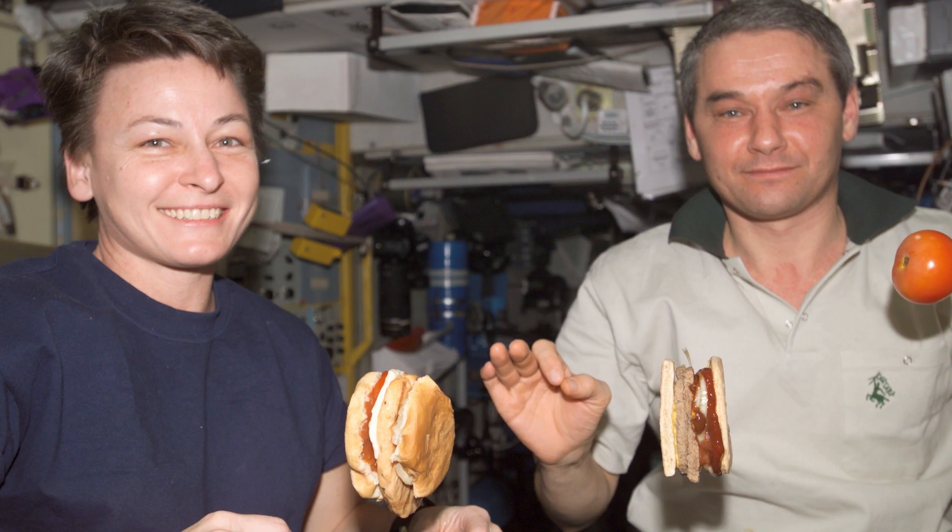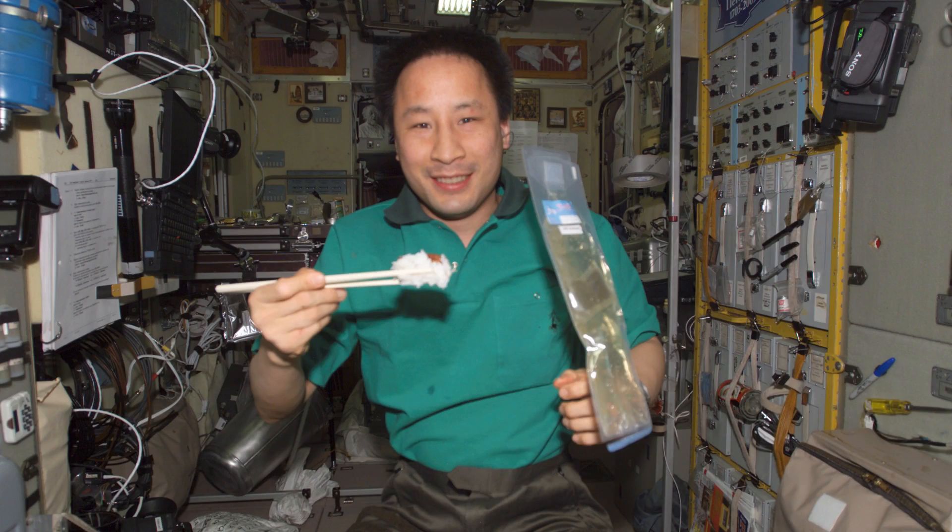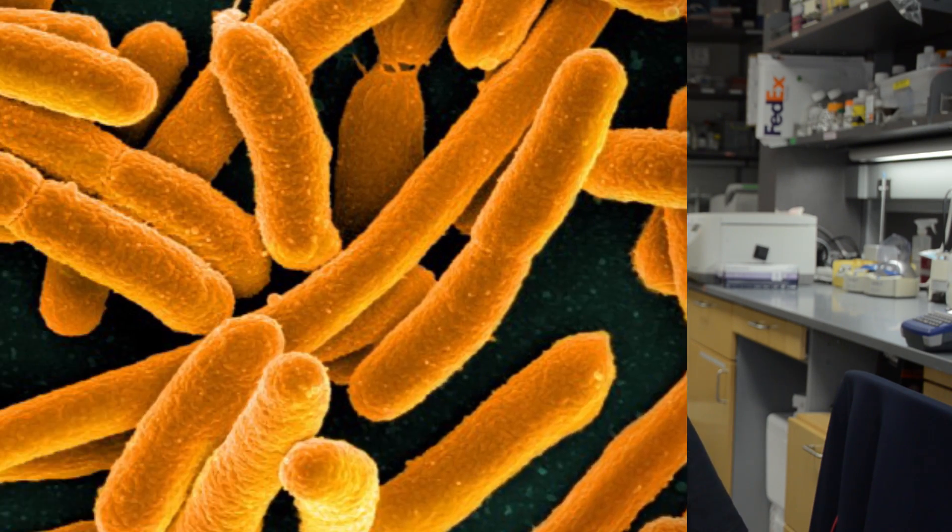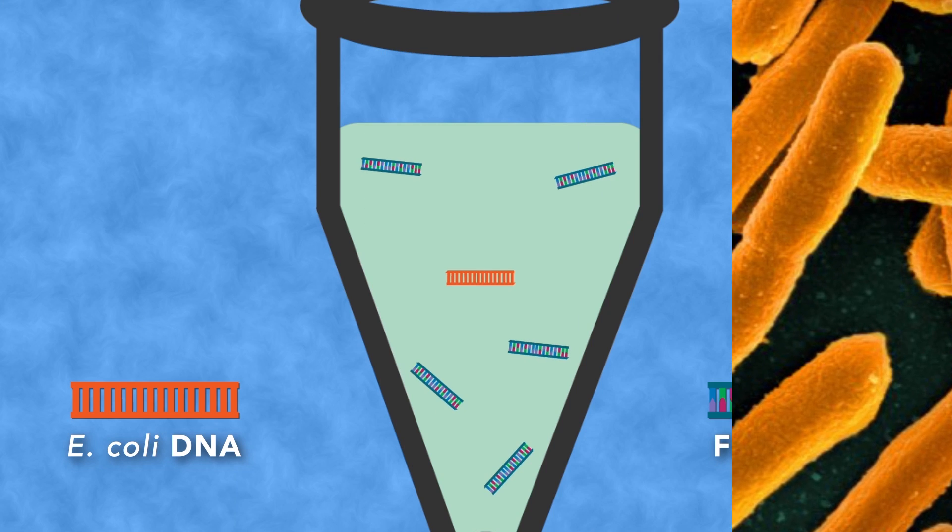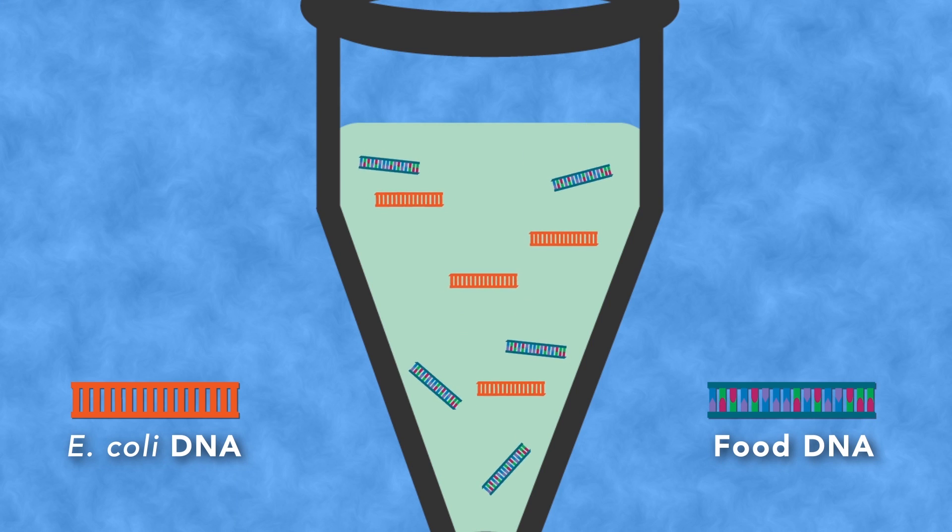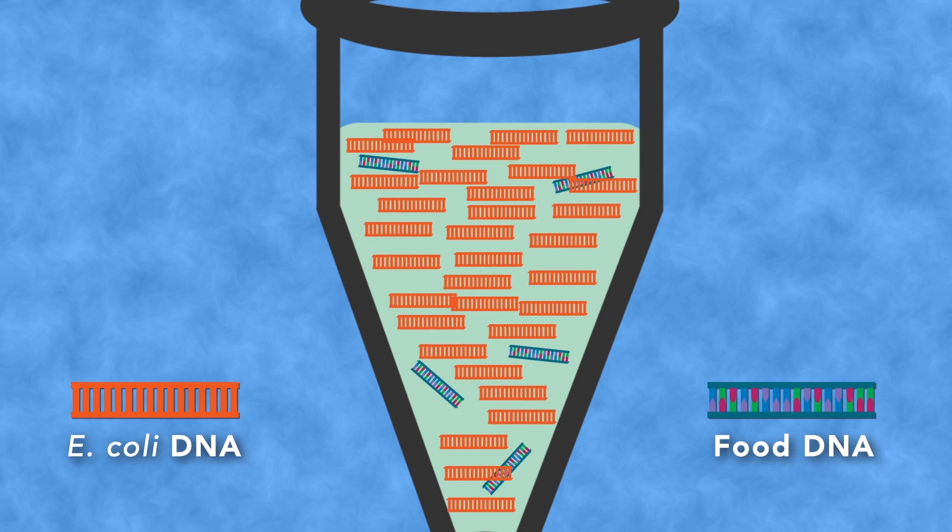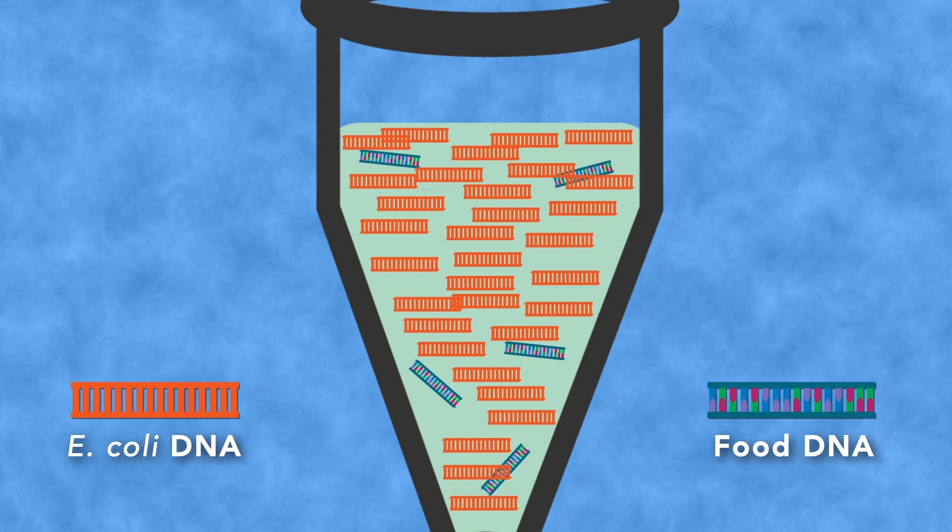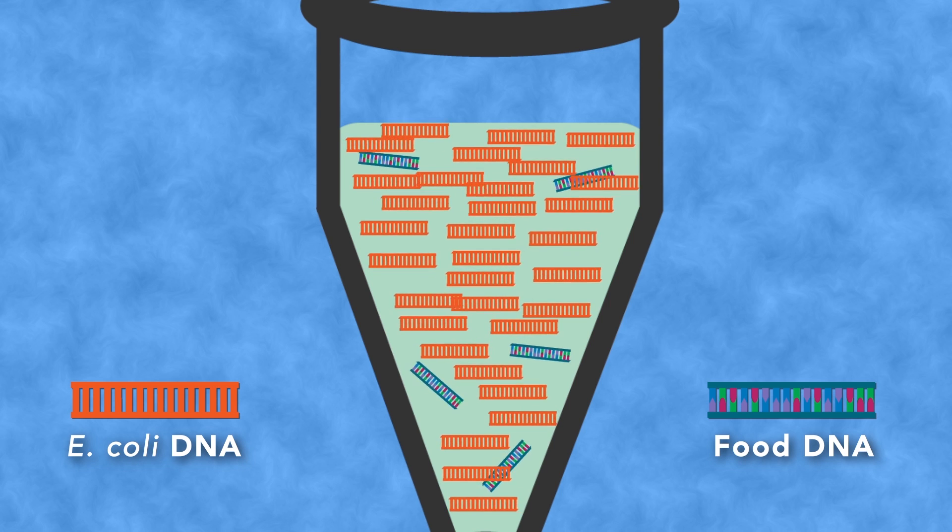In our last video, we used PCR to investigate a food poisoning outbreak on a spaceship bound for Mars. Everybody affected ate both the space burgers and the space sushi. We needed to figure out which one of these foods was contaminated with a dangerous strain of E. coli. We used PCR to amplify a short piece of E. coli DNA from both of the food samples, looking for a harmful or pathogenic strain.